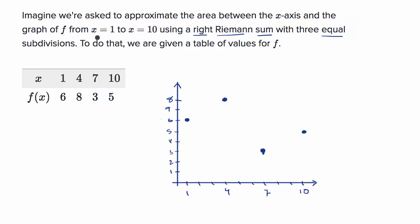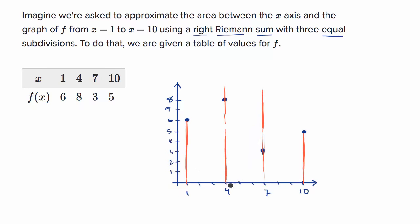We're thinking about the area from x equals one to x equals ten. What we want to do is have three equal subdivisions — there are three very natural ones here if we make each subdivision three units wide. So we've divided the interval from one to ten into three equal sections, each of width three.